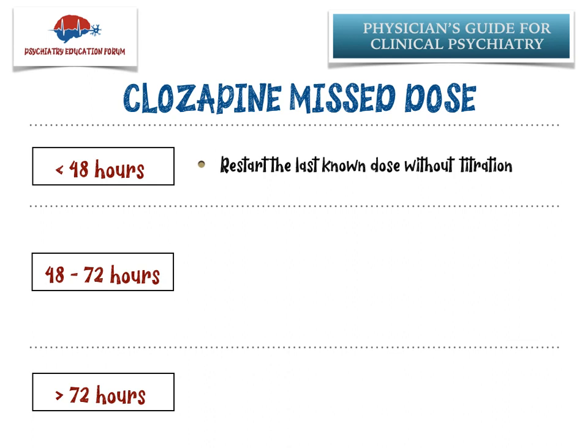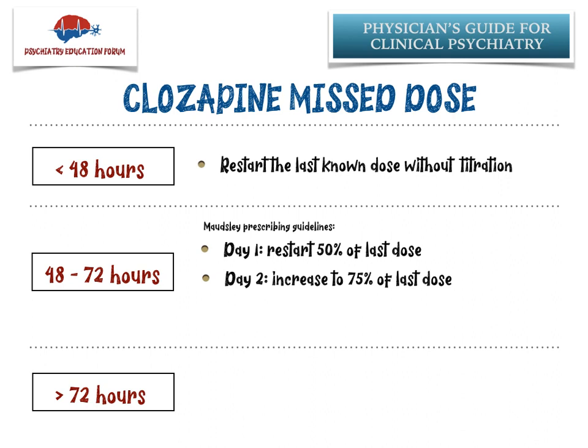What about patients who have missed between 48 to 72 hours — two to three days? These recommendations come from the Maudsley prescribing guidelines. They recommend starting at 50% of the last dose on day one, moving quickly to 75% of the last dose on day two, and if the patient is tolerating these doses well, reaching the last known dose on day three. So this is a very fast titration.